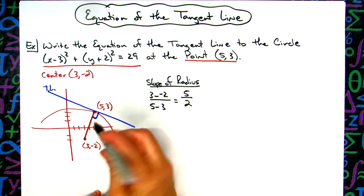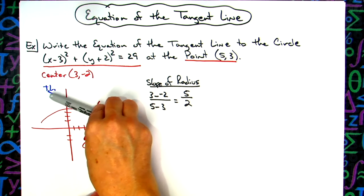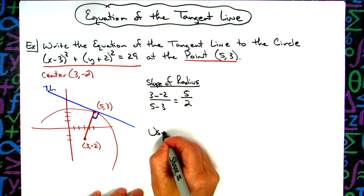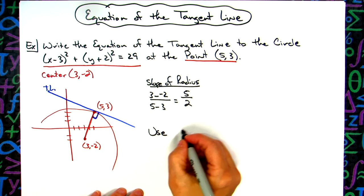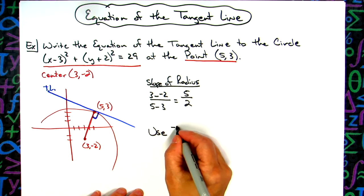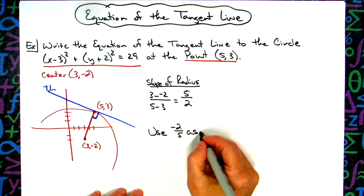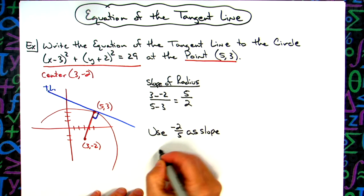Now, like I said, it's going to be perpendicular to the slope of the tangent line. So that means I'm going to have to use the negative reciprocal of that. So I'm going to use a negative two-fifths as the slope. Use negative two-fifths as slope of the tangent line.